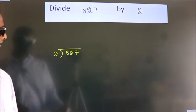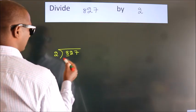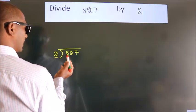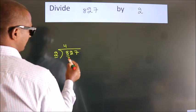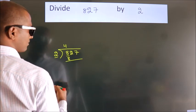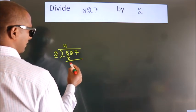Next. Here we have 8, here 2. When do we get 8? In 2 table, 2 fours, 8. Now, we should subtract. We get 0.